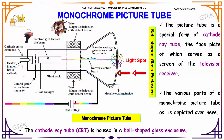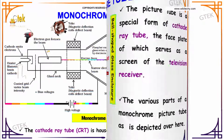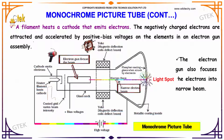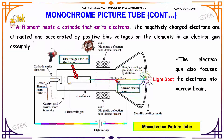The cathode ray tube CRT is housed in a bell-shaped glass envelope. A filament heats a cathode that emits electrons. The negatively charged electrons are attracted and accelerated by positive bias voltage. The electron gun also focuses the electrons into a narrow beam.